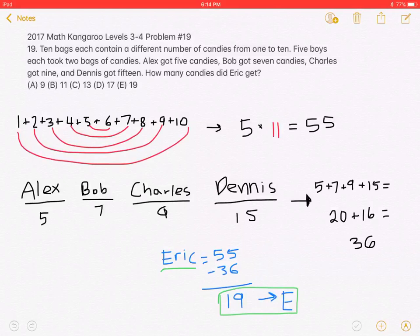If we add 5 plus 7 plus 9 plus 15 together, we get 20 plus 16, which equals 36. That means the sum of the candies the four boys have, without Eric, is 36 candies.